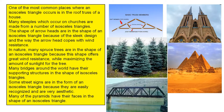Many bridges around the world have their supporting structures in the shape of isosceles triangles. Some street signs are in the form of an isosceles triangle because they are easily recognized and are very aesthetic. Many of the pyramids have their faces in the shape of an isosceles triangle.